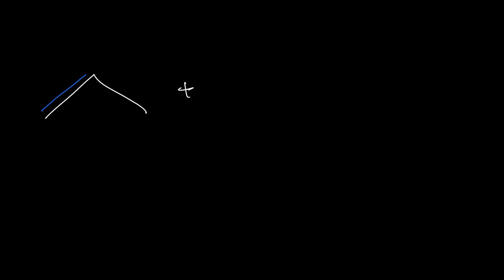First example: we're going to have a three-carbon chain with a double bond. So this is going to be propene, which is going to react with hydrogen bromide. What is going to be the major product of this reaction?